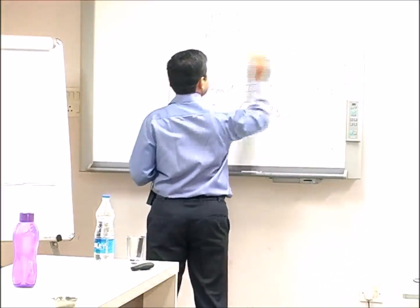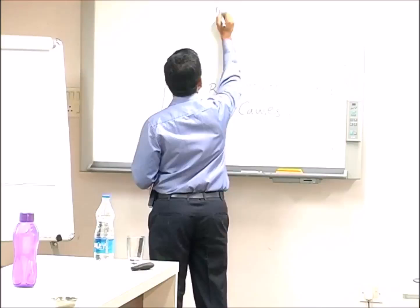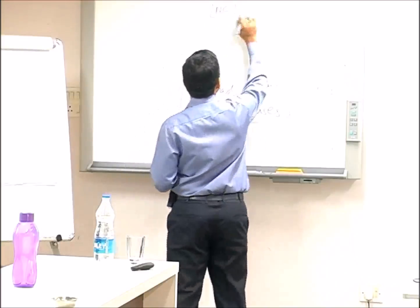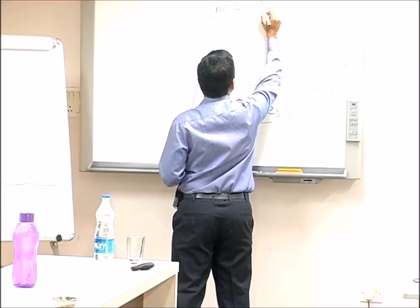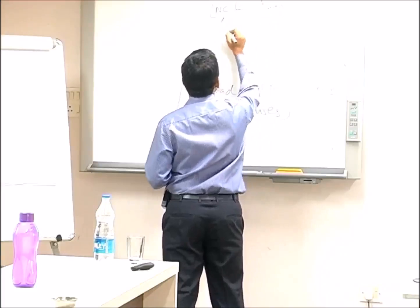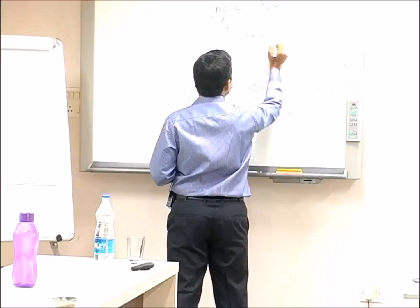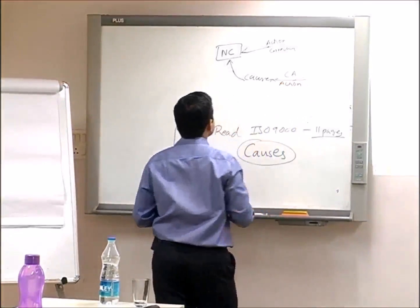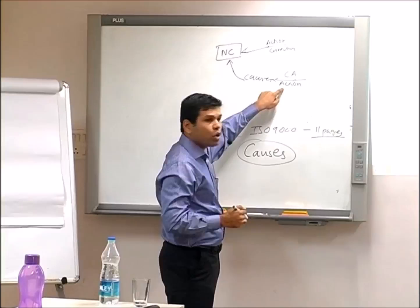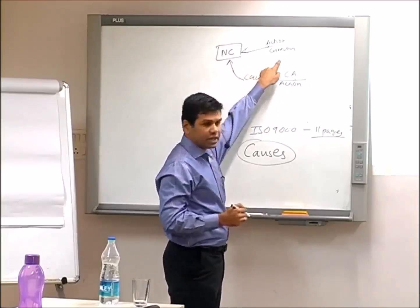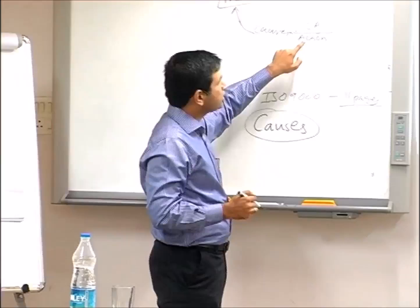If you try to understand: you have a non-conformity. One is taking action on the non-conformity — this action is correction. Another is you have a non-conformity, there are causes, and you take action on the causes — this is corrective action. Action on the non-conformity is correction. Action on the causes of the detected non-conformity to avoid reoccurrence is corrective action.